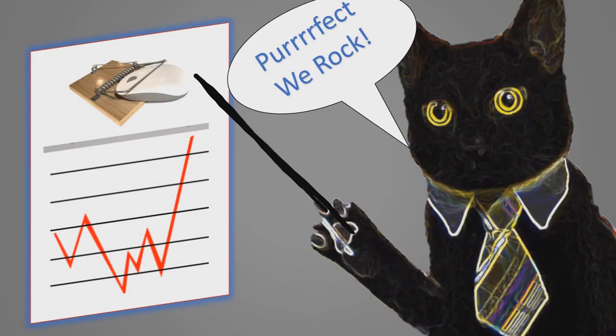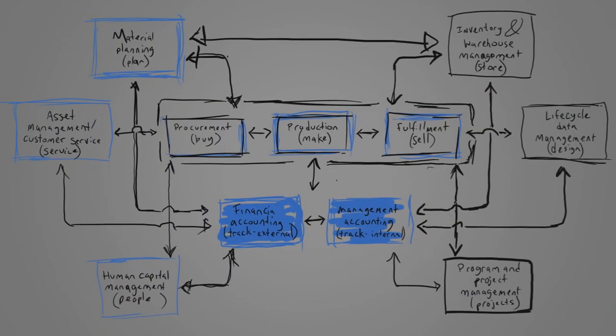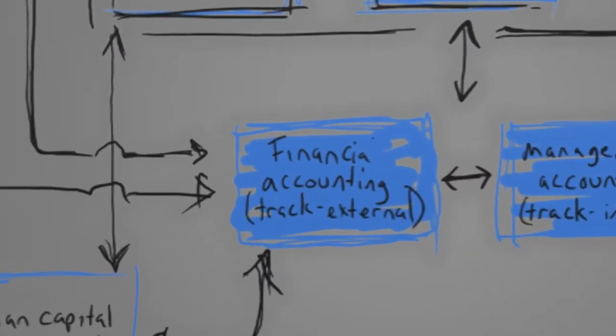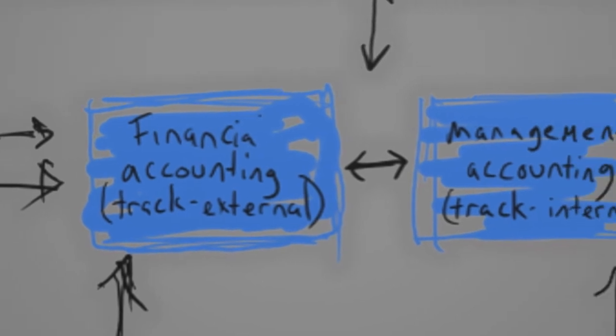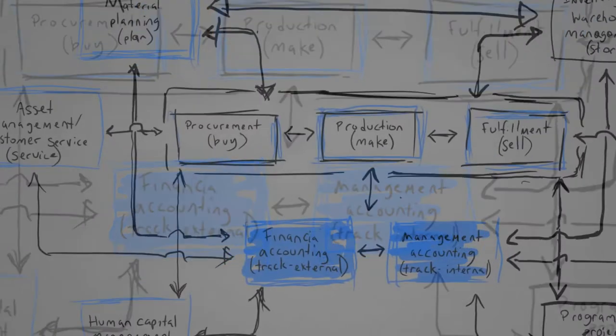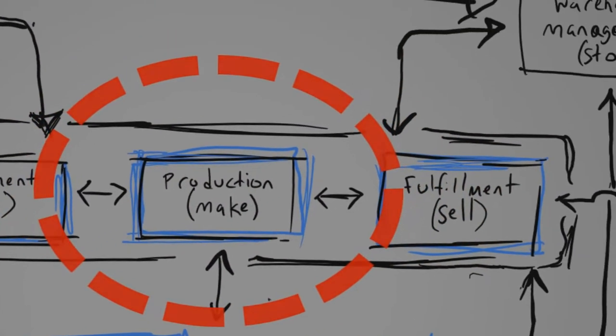Now let's take a closer look at how an ERP system integrates business departments. First off, an ERP system is the backbone of financial accounting for such things as taxes or investors, and for managerial accounting for internal business decisions. Of course accounting is obvious, but there's also procurement where you acquire the raw materials to production where you...